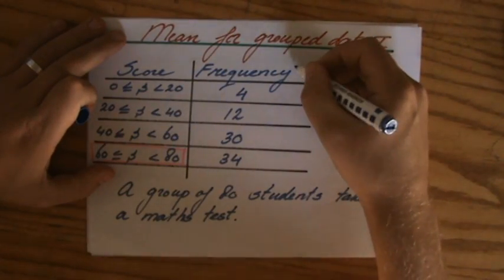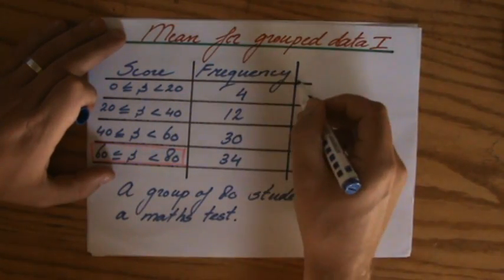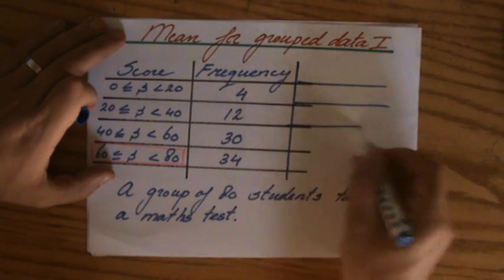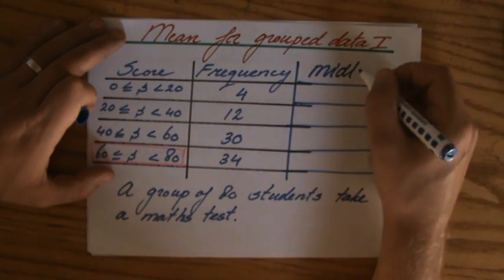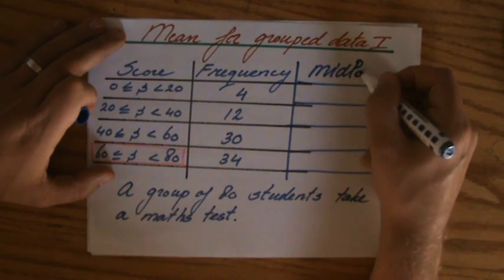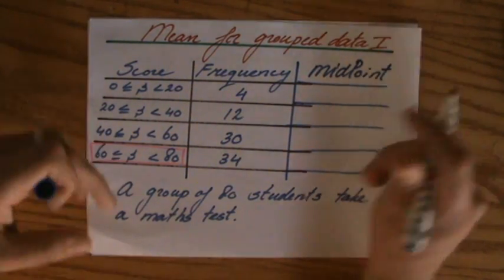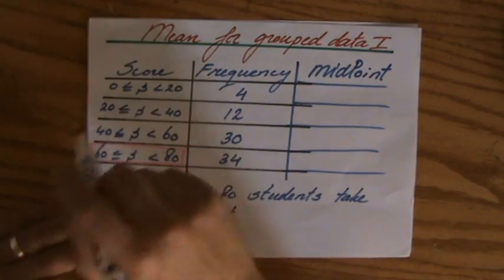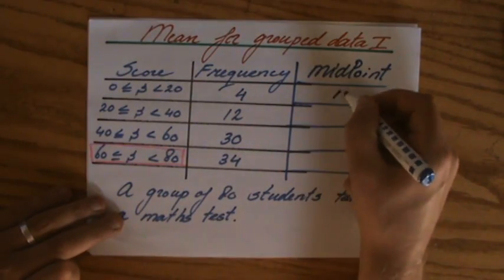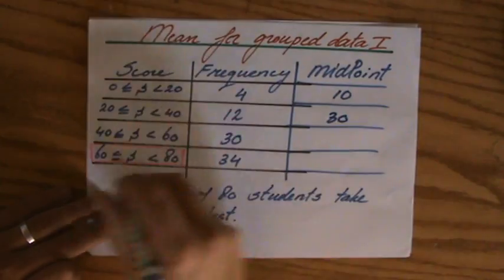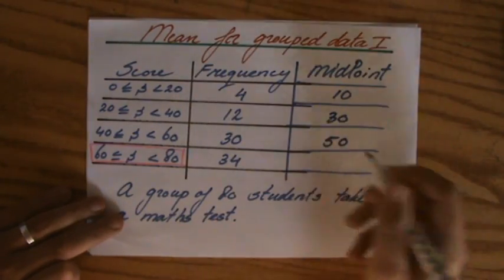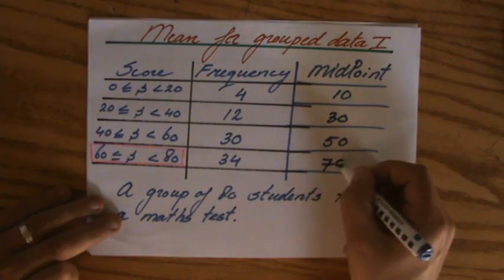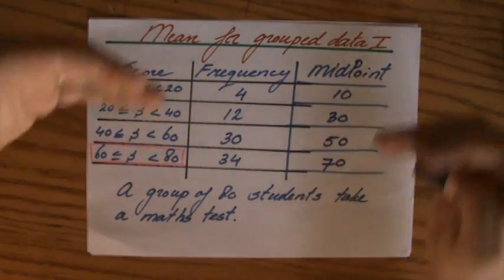To calculate an estimate of the mean, I have to take what we call the midpoint of each group. What lies in the middle? Between 0 and 20, that is 10. Between 20 and 40, that would be 30. Between 40 and 60, that would be 50. Between 60 and 80, that will be 70. So I take the midpoint.